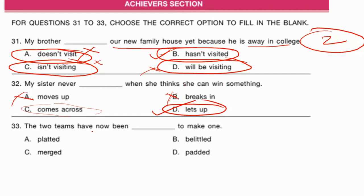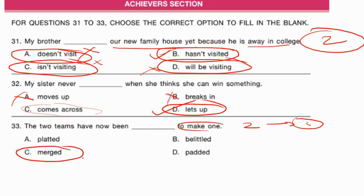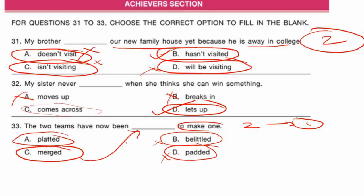'The two teams have now been ___ to make one.' The word meaning to join together is 'merged.' 'Merge' is the correct option — the two teams have been merged to make one. 'Parodies' means adding something for comic effect. 'Belittle' means to ignore or diminish. 'Plated' is unrelated. The correct answer is merged.